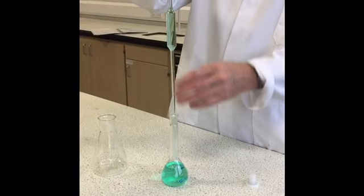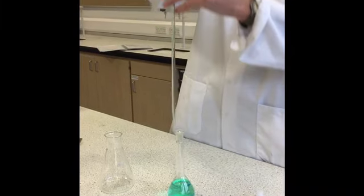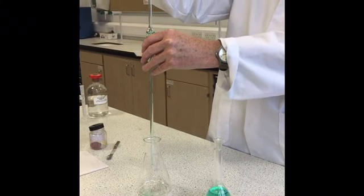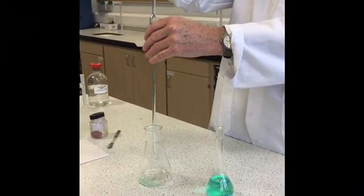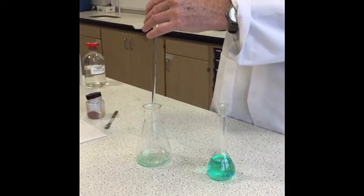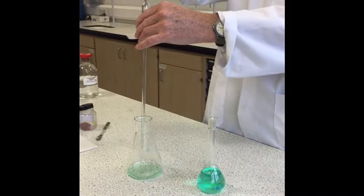Okay we now transfer 20 mils of the nickel salt into the conical flask. We have of course already washed our pipette with a few mils of our nickel solution prior to getting the 20 mils for transferring.